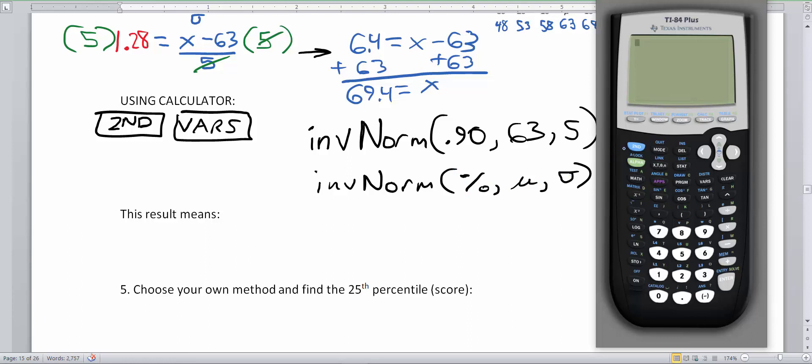So if I go second vars, which is right under the down arrow key, now I'm in my distribution menu. I'm going to click down to inverse the norm. And now I'm going to type in, so you can see from a previous class, I have that typed in as 0.90, hit enter, 63, hit enter, and hit 5, hit enter, and paste it, and there it is, my inverse norm equation just like written here.